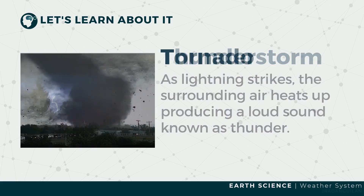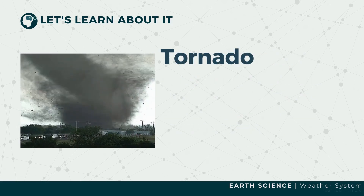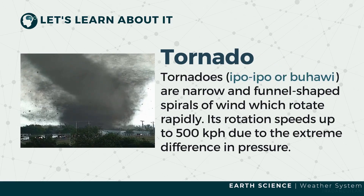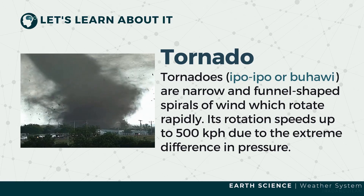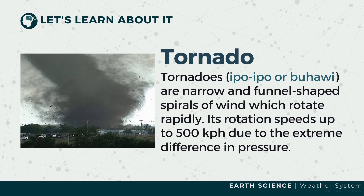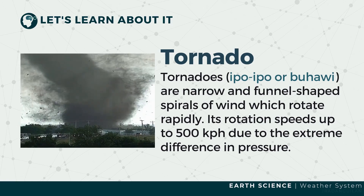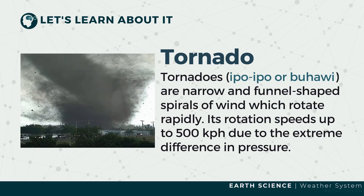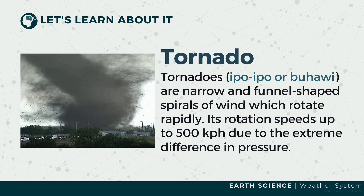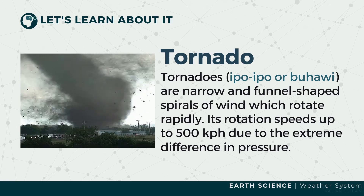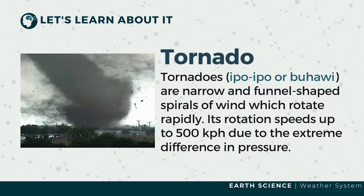Associated with thunderstorms are tornadoes. Tornadoes, or locally known as ipo-ipo or buhawi, are narrow and funnel-shaped spirals of wind which rotate rapidly. The rotation speeds up to 500 kilometers per hour due to extreme differences in pressure. The Fujita intensity scale categorizes tornadoes as weak, strong, and violent. The basis for the scale are wind speed and degree of destruction.